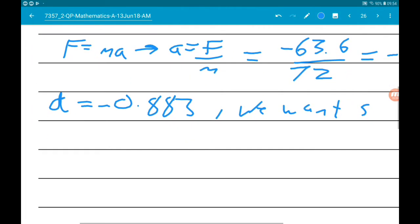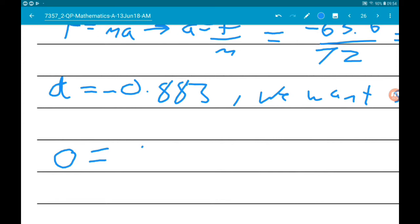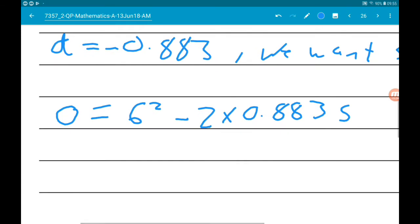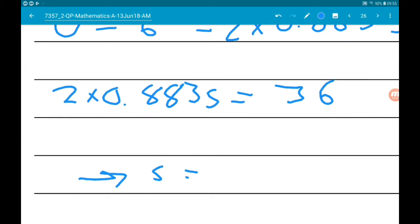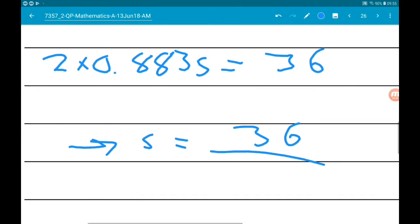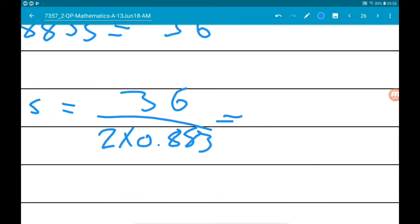We get 0 is equal to 6 squared minus 2 times 0.883 S. So 2 times 0.883 S is equal to 36. S is equal to 36 over 2 times 0.883.